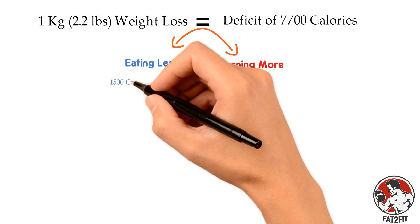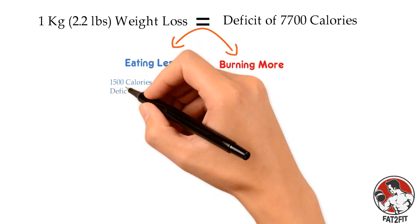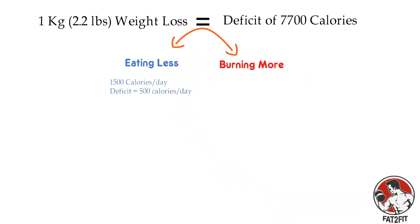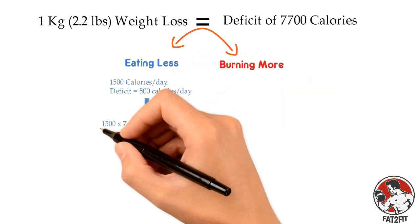In the above example, if you consume around 1500 calories per day, you're already at a deficit of 500 calories daily. In a week, that sums up to 3500 calories.